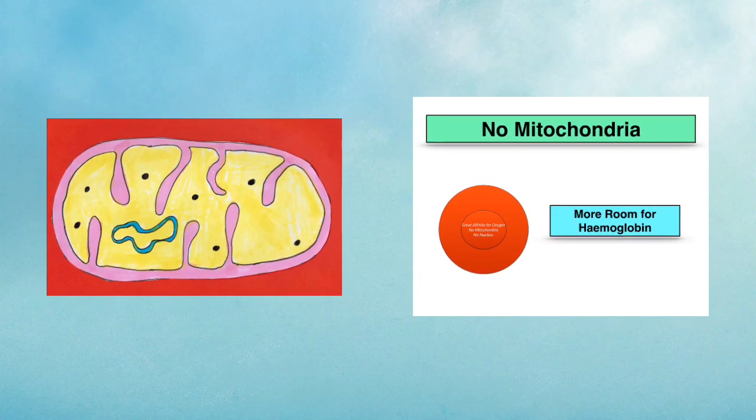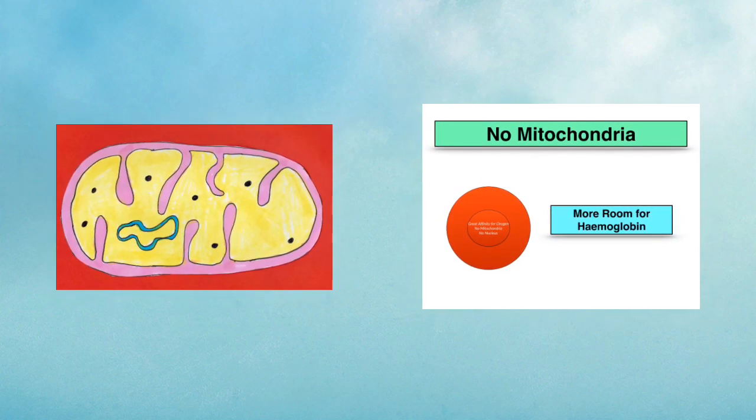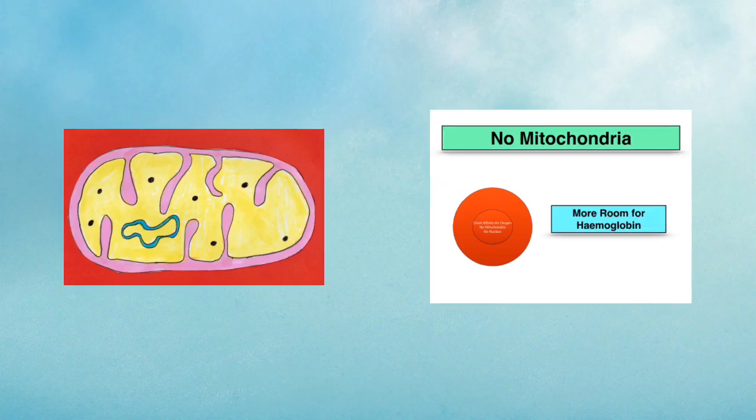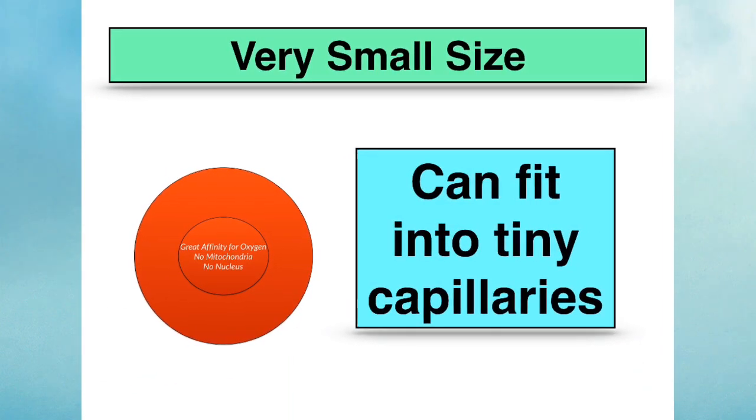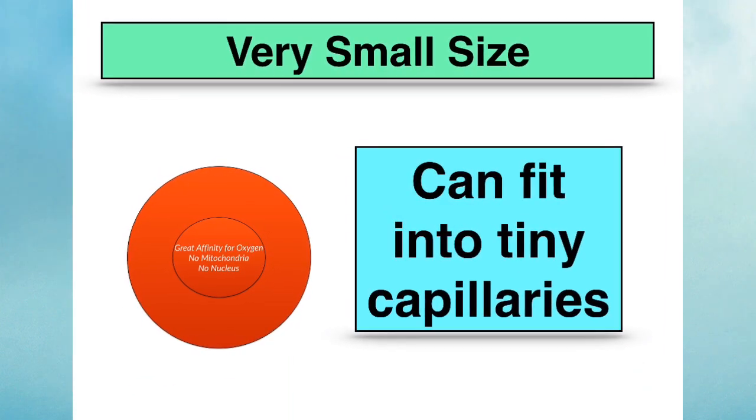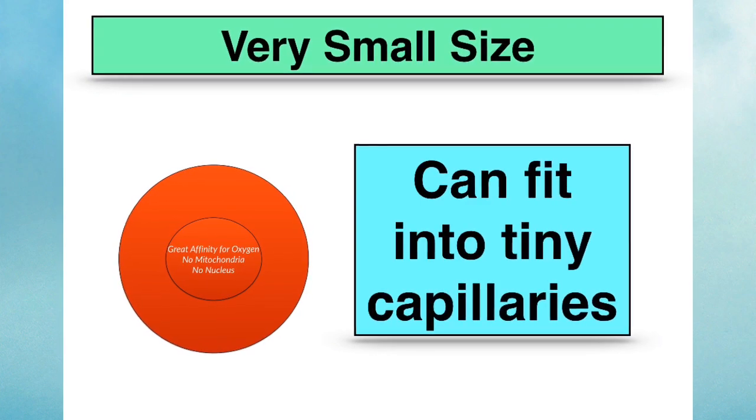Erythrocytes or red blood cells have no mitochondria at maturity, also to make room for those haemoglobin molecules. Red blood cells are also very tiny, very small in size, and this is to enable them to fit into those tiny blood vessels of the capillaries.